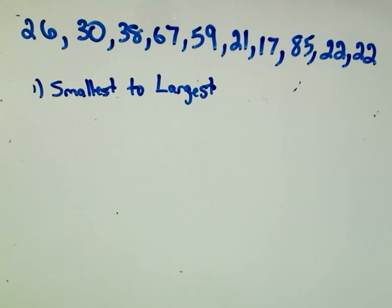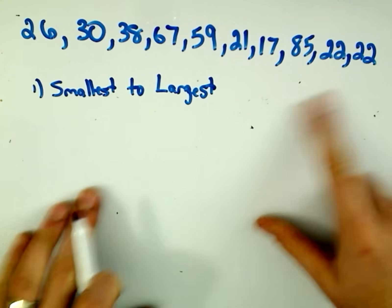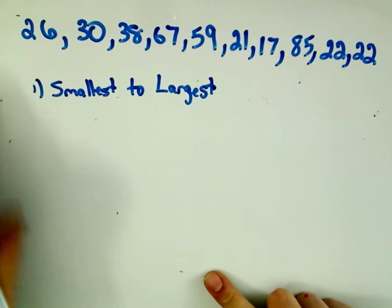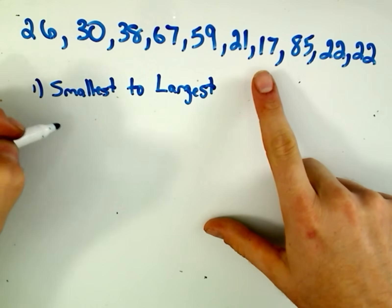So here I've got some numbers: 26, 30, 38, 67, 59, 21, 17, 85, 22, and 22. And the first thing you do is label these, order them from smallest to largest.